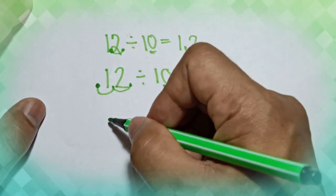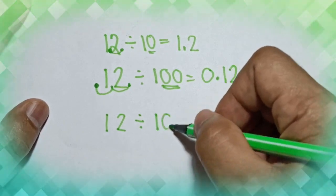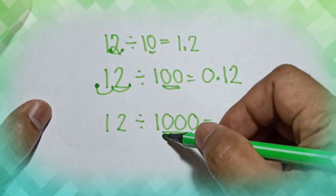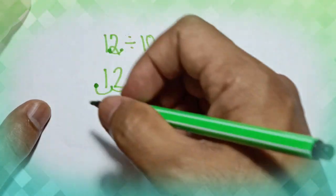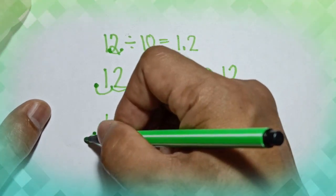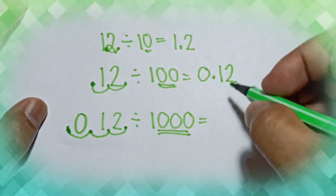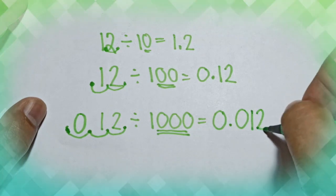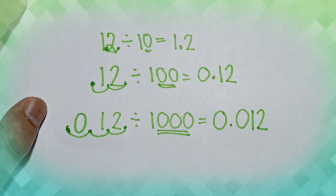And if you have 12 divided by 1,000: in 1,000 there are three zeros and the decimal point of 12 is here, so you move the point three times to the left — one, two, three. Add a zero as a placeholder and your answer becomes 0.012. Those are the different answers when dividing 12 by 10, by 100, or by 1,000.